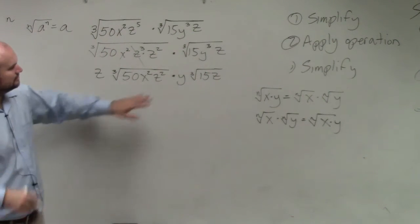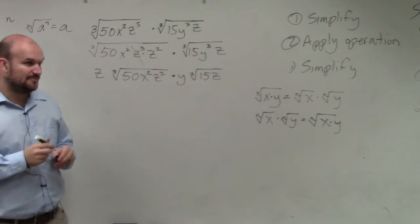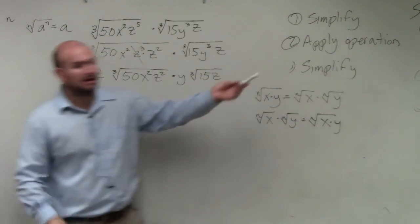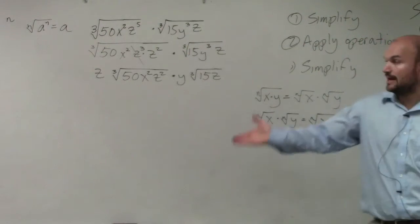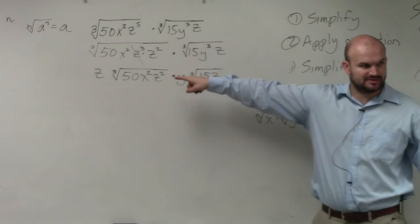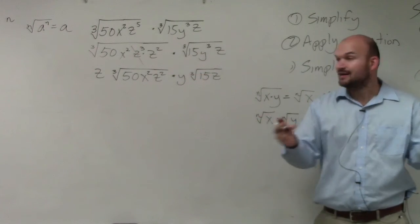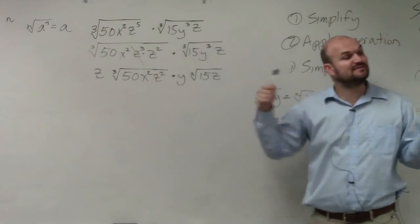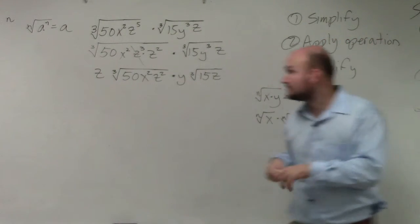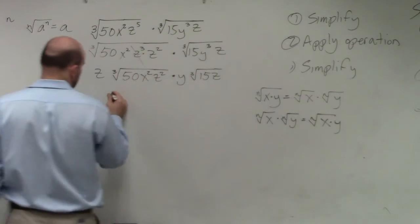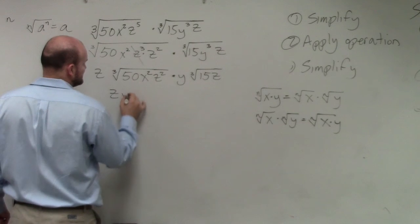I got that, but I thought you were the next step, so I got confused. OK. So now, the next step is apply the operation. So again, what is our operation? We're multiplying these two, right? So whatever is outside the radical, we can multiply. And since they have the same index, whatever is inside the radical, we can multiply. So z times y, and that's just a variable times a variable, so that's zy.